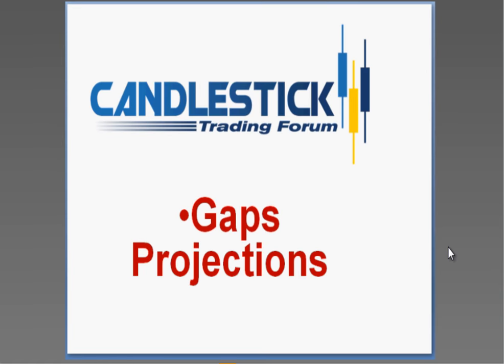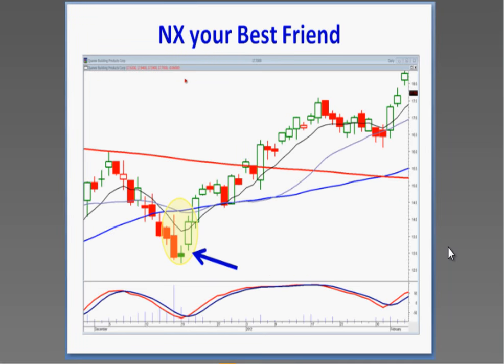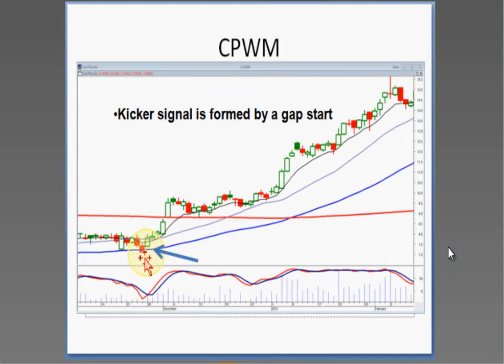Did I miss explaining what a kicker signal is? It's not just a gap and open in the opposite direction of the established trend. You usually want to see a big dark candle — the previous candle is a dark candle, the next day they gap it up at or above the previous day's open and go in the opposite direction. So the gap up has already occurred from the previous day's close, gapping up above the previous day's open.